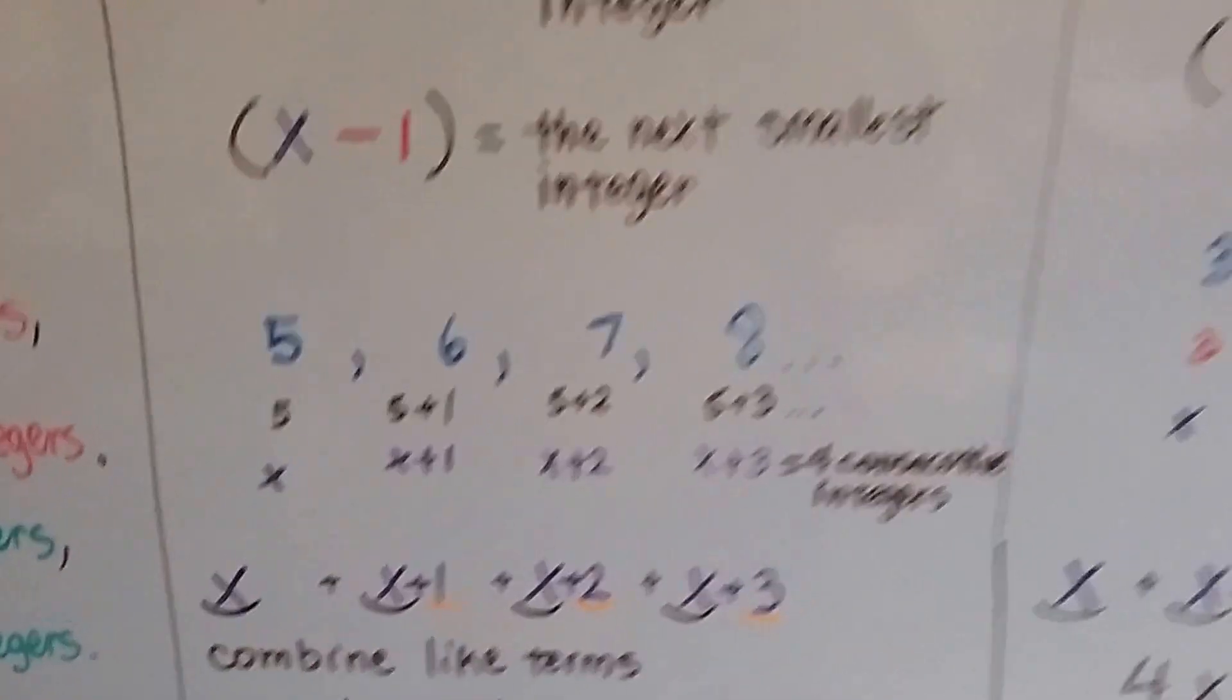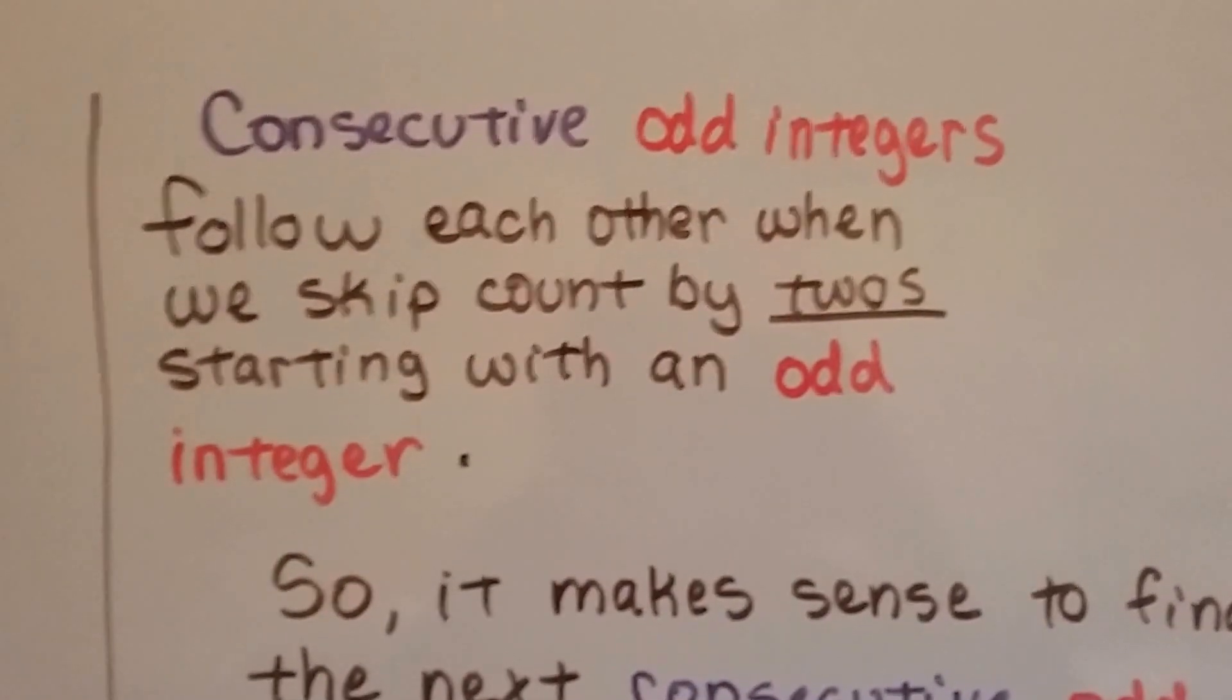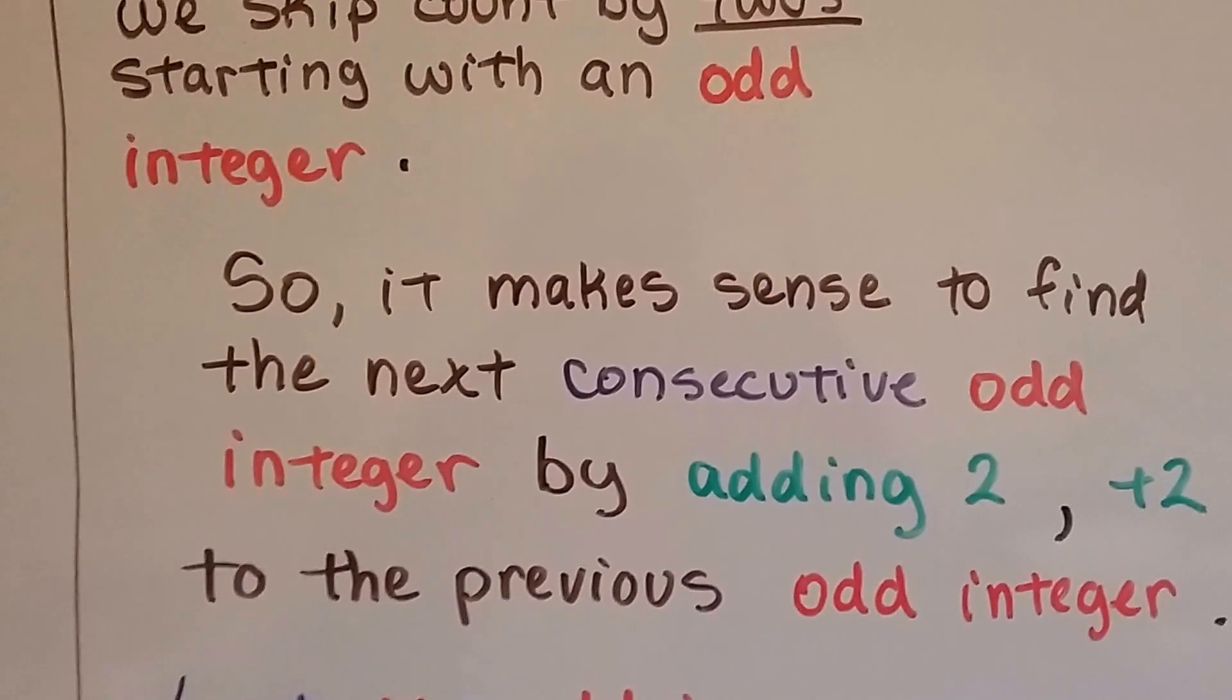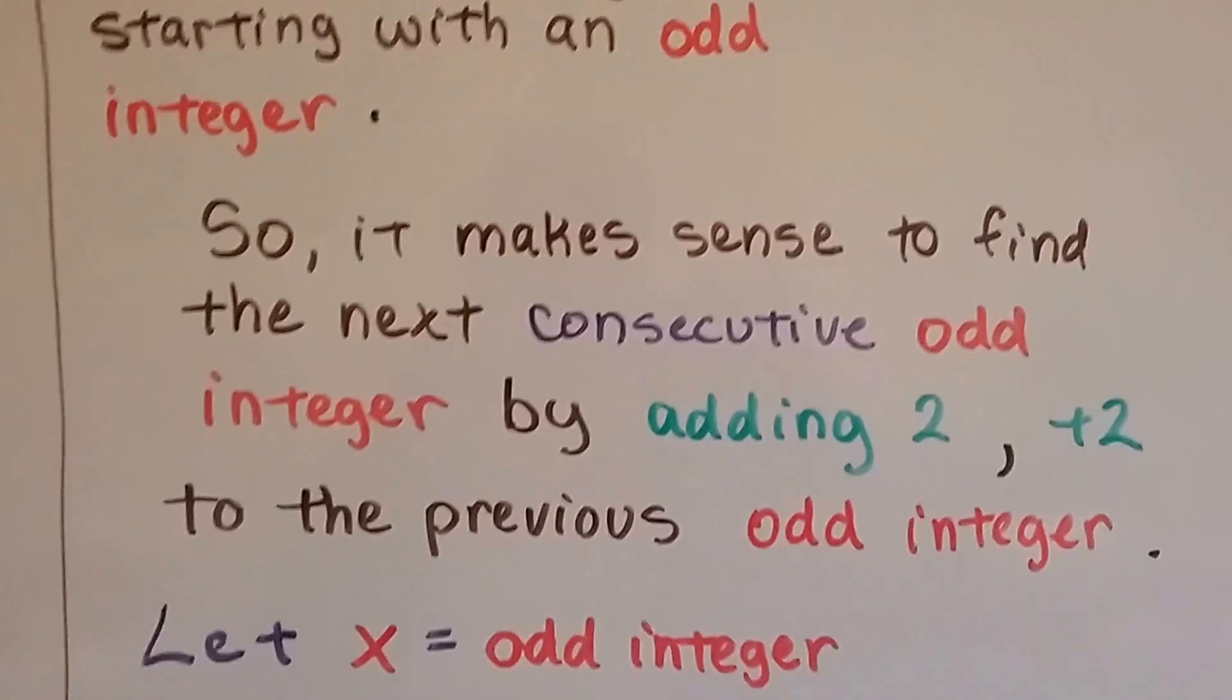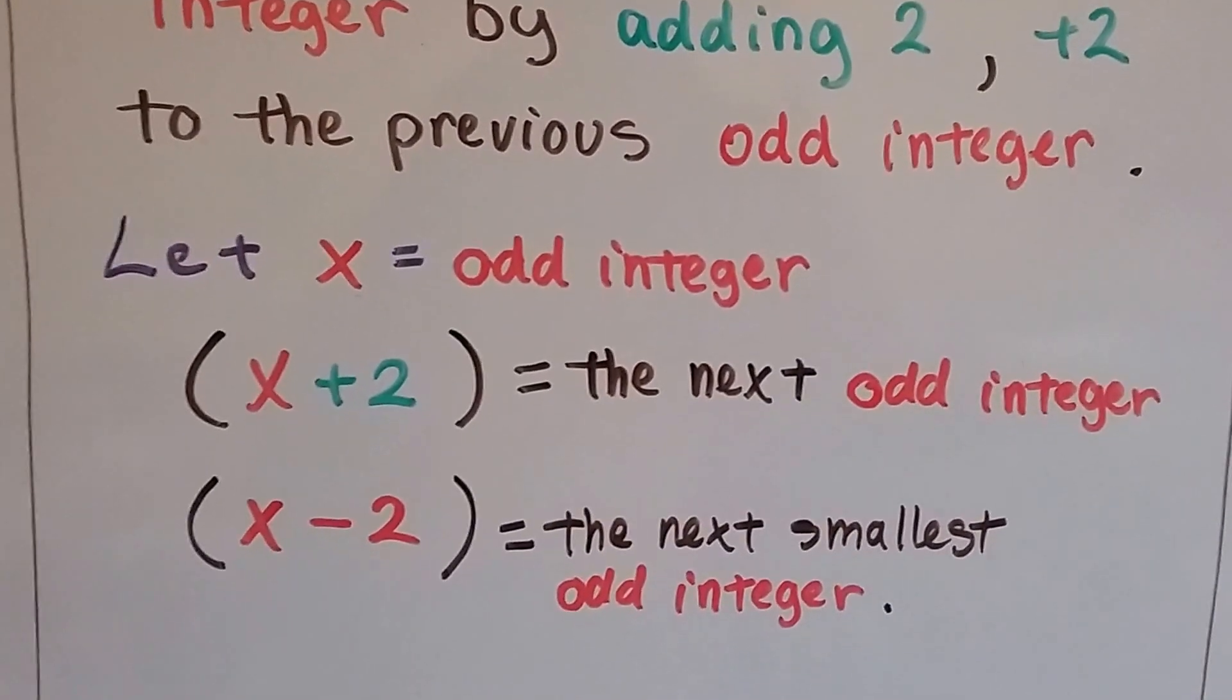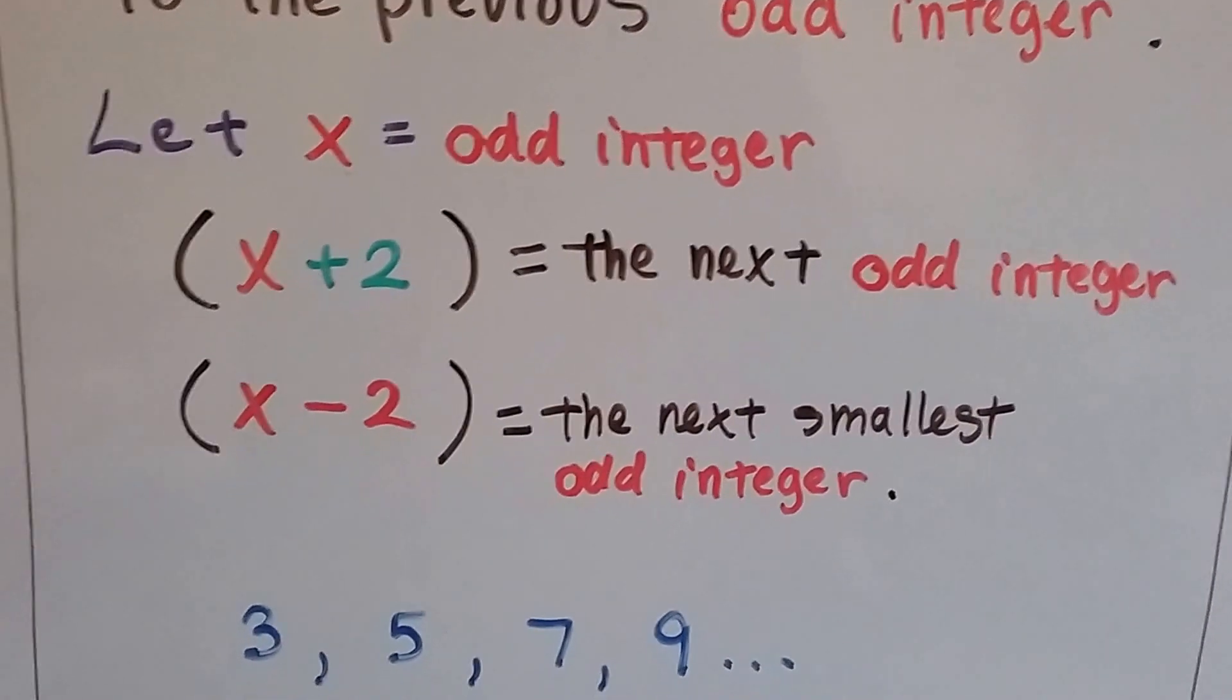Let's try it with odd ones. Consecutive odd integers follow each other when we skip count by twos, starting with an odd integer. So it makes sense to find the next consecutive odd integer by adding 2 to the previous odd integer. If we let x equal an odd integer, then x plus 2 is the next odd integer, and x minus 2 is the next smallest odd integer.